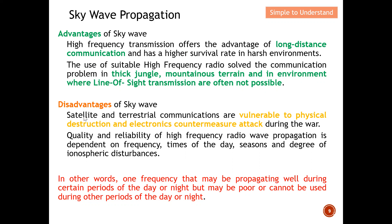For the disadvantages of sky wave: satellite communication is very vulnerable to physical destruction and electronic countermeasure attacks during war. This sky wave propagation is also vulnerable — for example, a strong interference can be introduced through electronic countermeasure attacks. The quality and reliability of HF radio wave propagation depends on frequency, time of day, season, and the degree of ionosphere disturbance.